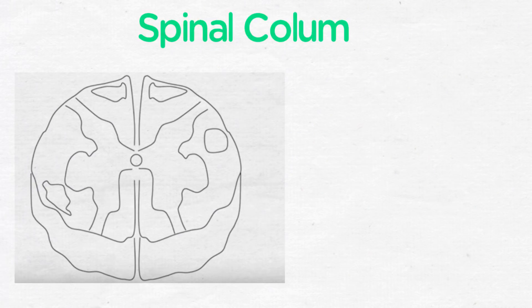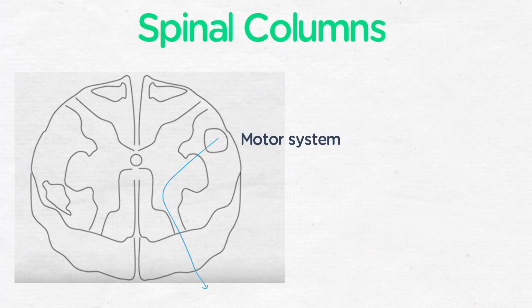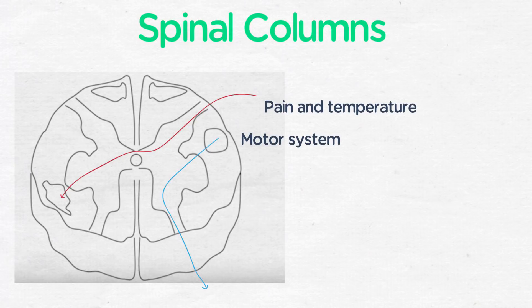Review the three spinal columns and where they travel within the cord — it's very useful to know this anatomy for tests. The anterior column controls skeletal muscle motor function. The lateral spinothalamic tract controls pinprick pain and temperature. It lies anteriorly in the cord, and it decussates in the spinal cord and ascends in the contralateral lateral spinothalamic tract.